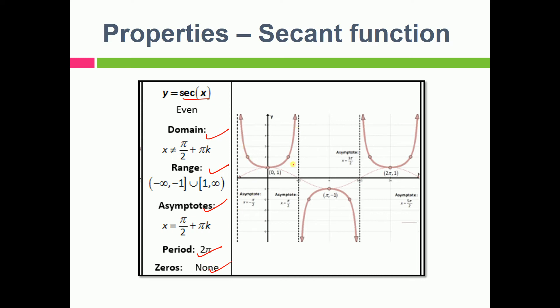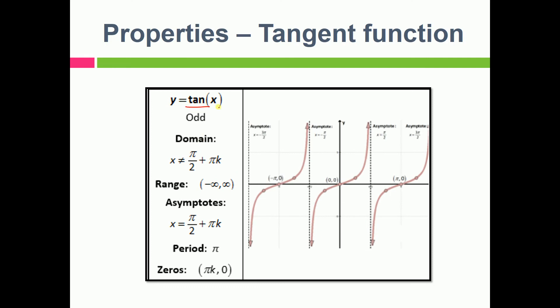Then we have tan x. This is also an odd function, the domain, range, asymptotes, period, zeros, and the graph looks like this.